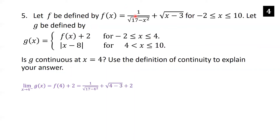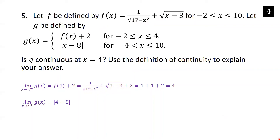Computing f(4): 1/√(17−16) + √(4−3) = 1/√1 + √1 = 1 + 1 = 2. Adding the +2 gives f(4) + 2 = 4. So the left-hand limit as x approaches 4 equals 4.